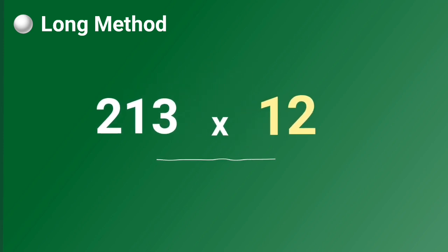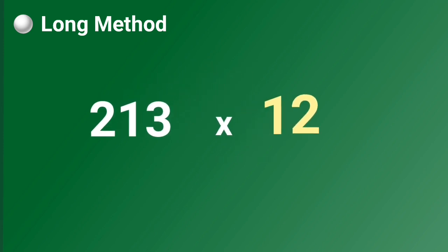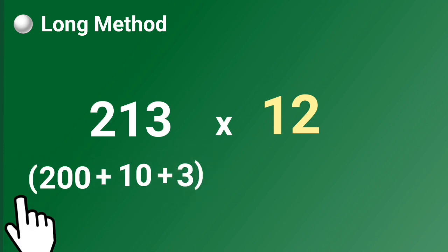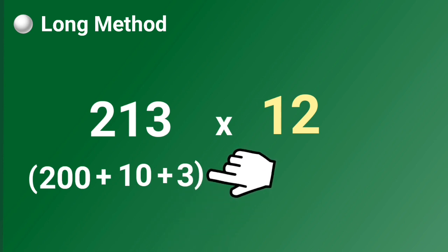In the long method, you have to write your multiplicand and multiplier in expanded form. Watch this. The value of digit 2 is 200. Digit 1 is 10. And lastly, digit 3 is 3. This is the expanded form of number 213.